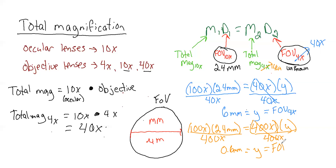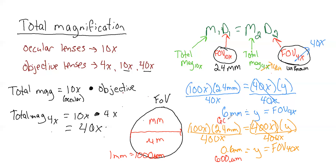The other thing you can do is convert your millimeters to micrometers. Since 1 millimeter equals 1,000 micrometers, to convert we just multiply by 1,000. So 0.6 times 1,000 gives 600 micrometers, and 6 times 1,000 gives 6,000 micrometers — the same values, just in different units. This diameter measurement across the circle of our field of view can then be used to estimate how large the objects underneath the microscope are.